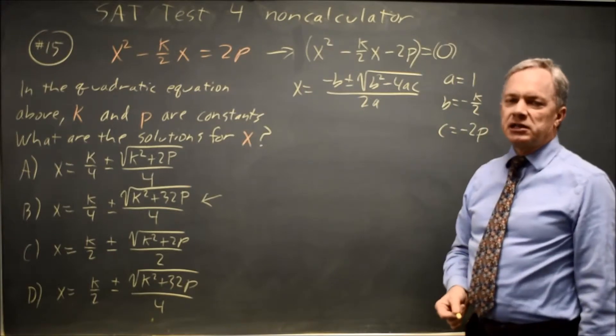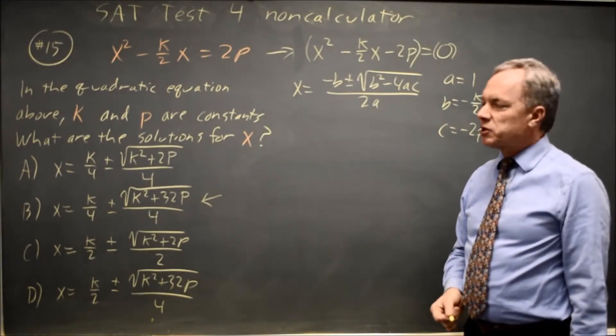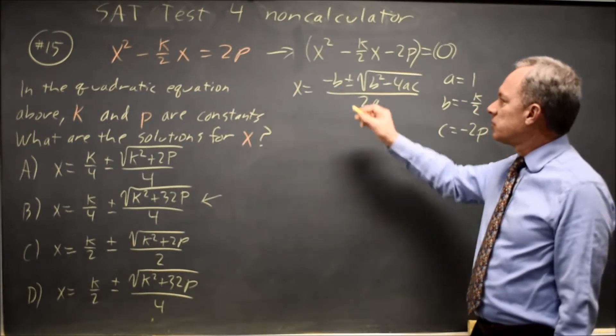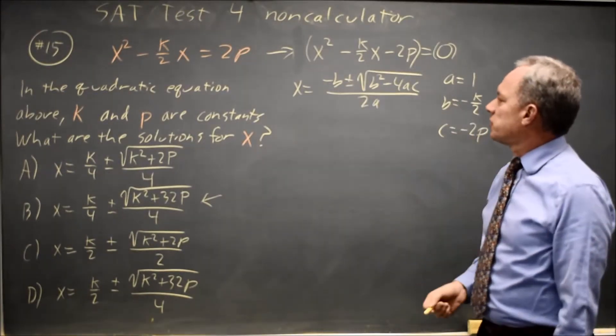Again, I write out a, b, and c so I don't swap and put the wrong value into one of these positions, and that's the same reason I write out the quadratic formula, plus I'm trying to make sure I don't drop a negative.